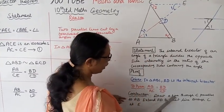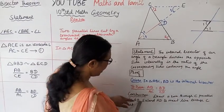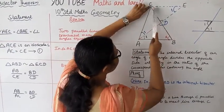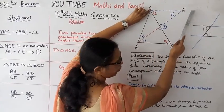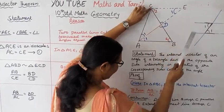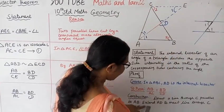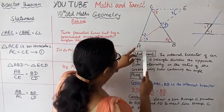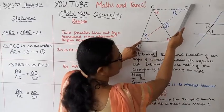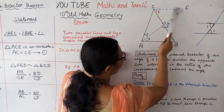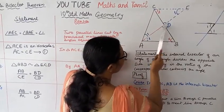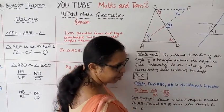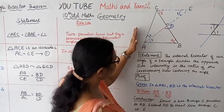Draw a line through C parallel to AB. AB is parallel — draw a line through C. Extend AD to meet the line through C at G.